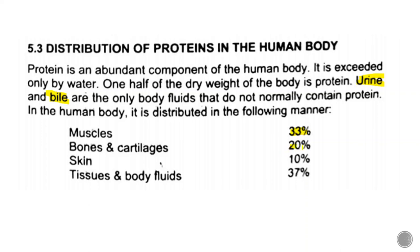In bones and cartilage, proteins make up about 20%. Skin accounts for about 10%. Tissues and body fluids account for about 37%. You should remember these percentages as they are very important.